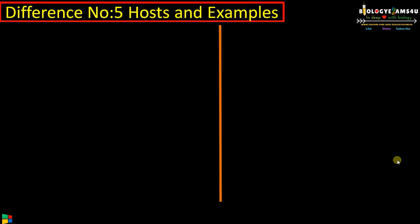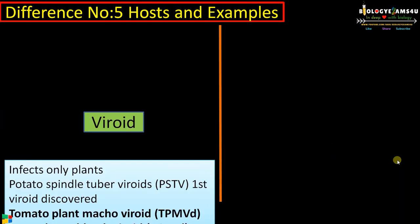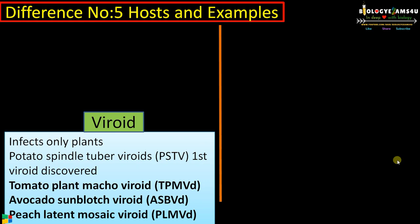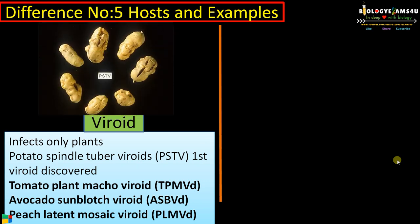The final difference, number five, regards host and examples. Viroids infect only plants. Potato spindle tuber viroid is the first one discovered, causing potato spindle tuber disease — you can see a deformed potato infected by PSTV. Other viroid diseases include tomato plant microviroid, avocado sunblotch viroid, and peach latent mosaic viroid.